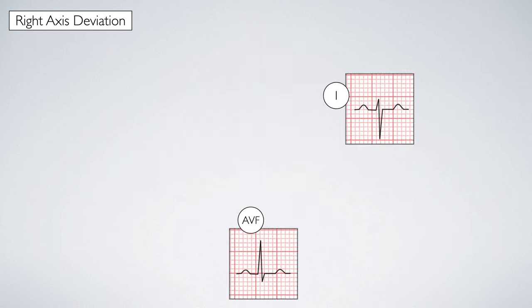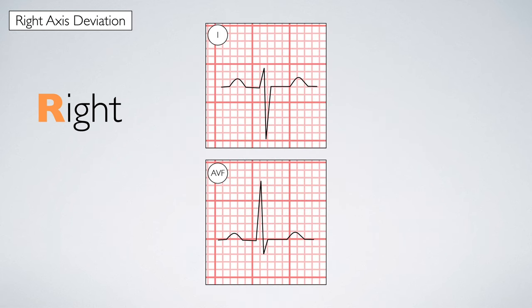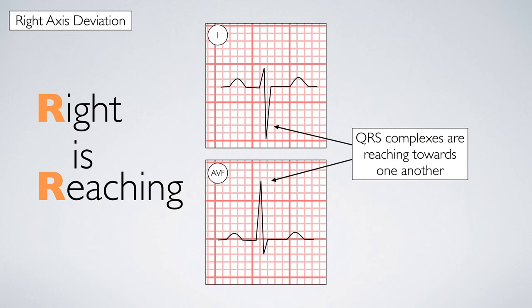To remember this pattern, just think of the phrase right is reaching, indicating that the QRS complexes from lead one and AVF appear to be reaching towards one another.